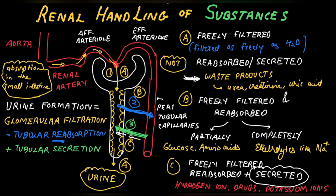To sum up: urine formation is a combination of glomerular filtration minus tubular reabsorption plus tubular secretion. Substances like urea and creatinine are freely filtered and not reabsorbed or secreted. Some substances are freely filtered and reabsorbed — partially, like electrolytes, or completely, like glucose and amino acids. Some are freely filtered with reabsorption plus secretion, like hydrogen ions, potassium ions, and drugs. Thank you for watching. I am Dr. Swapnil Parlikar. Please like, share, and subscribe, and have a good day.